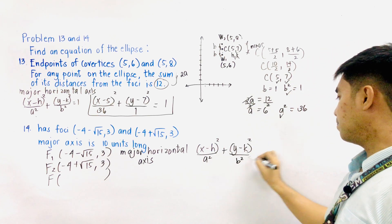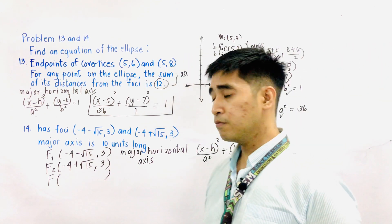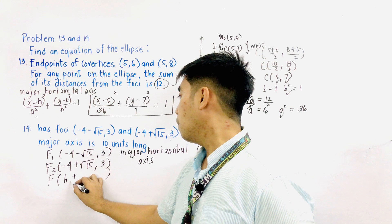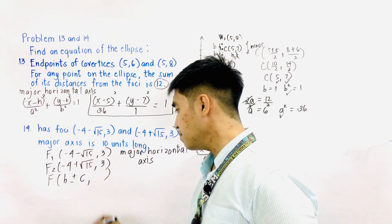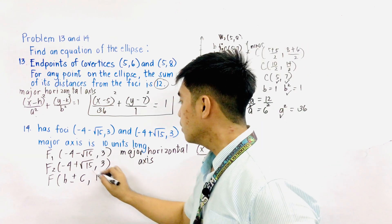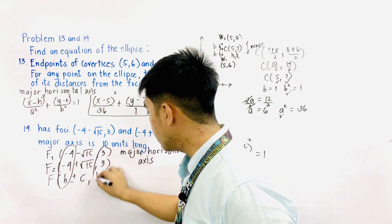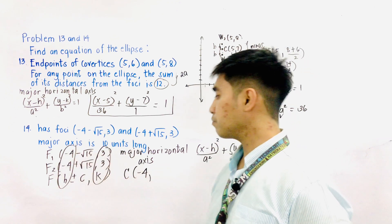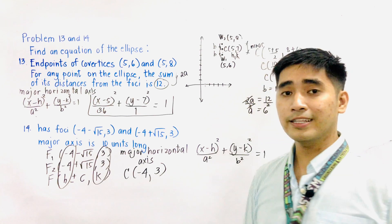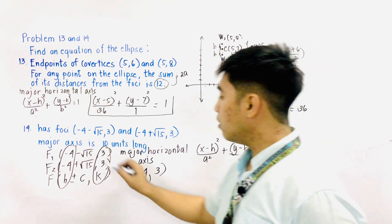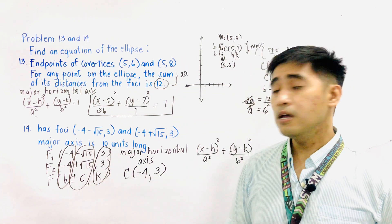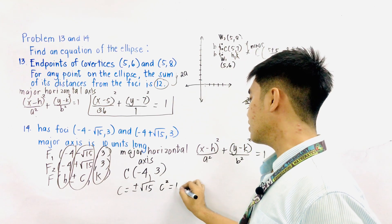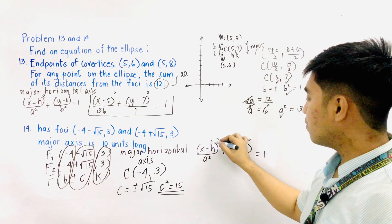The formula for the endpoints of the foci is (h ± c, k). Based on this arrangement, we can identify that the center is located at (−4, 3), so h = −4 and k = 3. The value of c is ±√15, therefore c squared equals 15. We now have c squared and the center, but we do not yet have a squared and b squared.